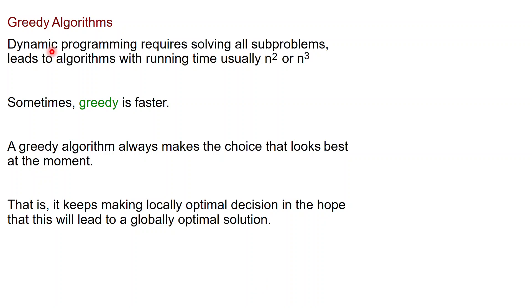Hi! In this video we're going to give an example of a greedy algorithm to select a set of activities. Typically, dynamic programming requires solving all sub-problems, and that leads to algorithms which are somewhat efficient, but still sometimes not as efficient as we would like them to be. So for example, typical runtimes are n-squared or n-cubed, but of course we would be much happier with a running time closer to linear. Sometimes one can develop a greedy algorithm that leads to a better running time.